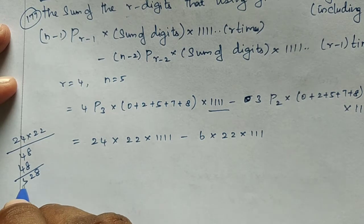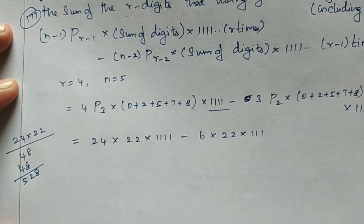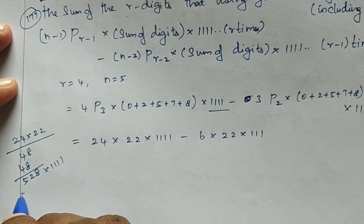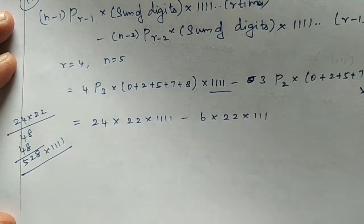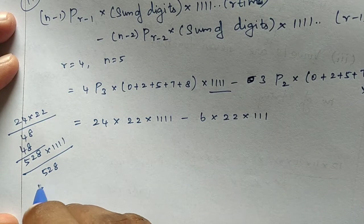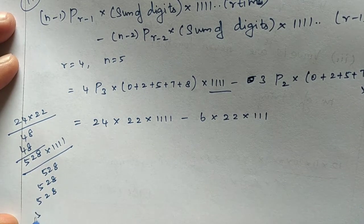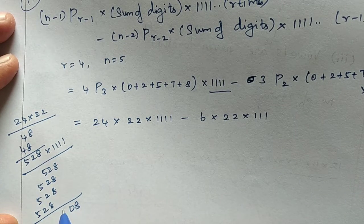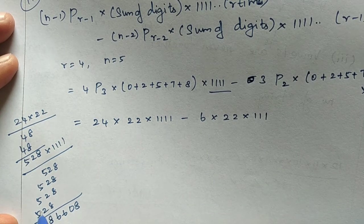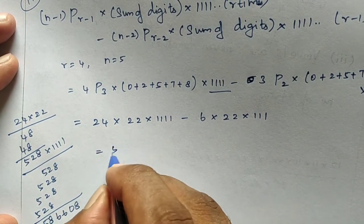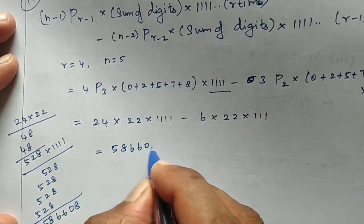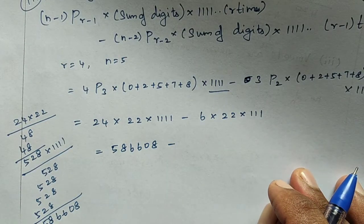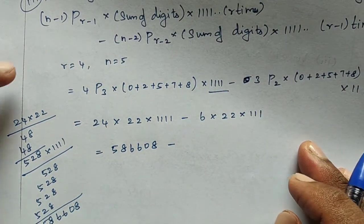Computing 528 × 1111: we get 528, 528, 528, 528 added with appropriate place values. The result of 528 × 1111 is 586608.